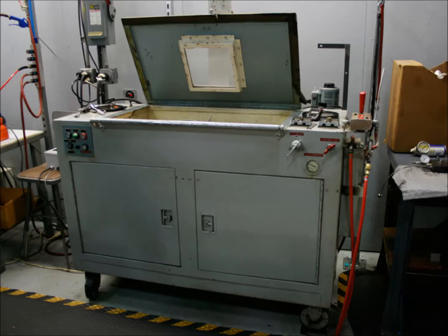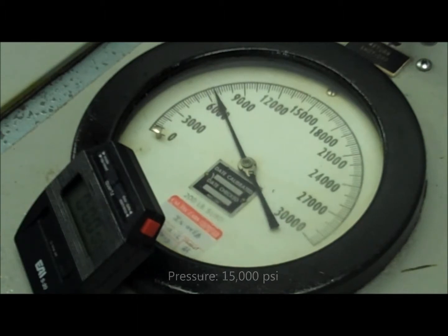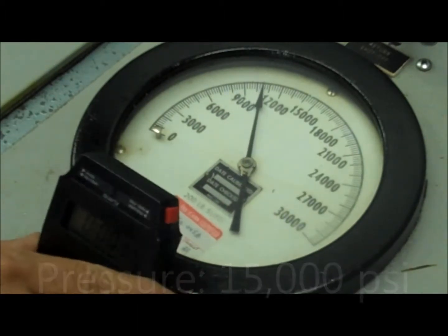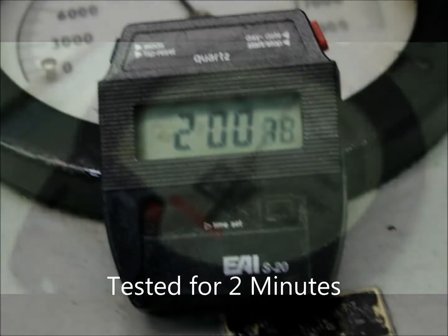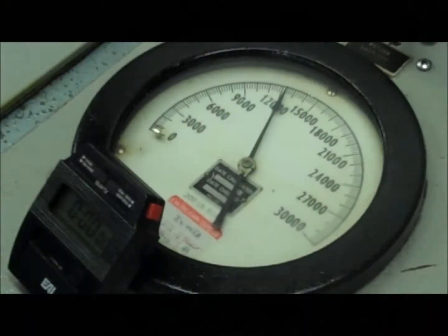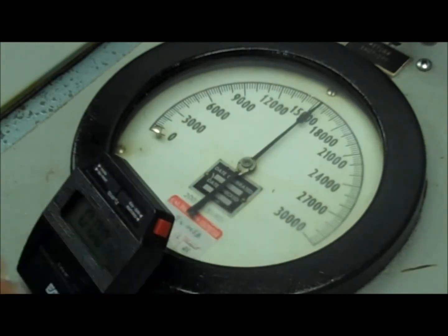We attach it to another fitting and do a static test. We build the pressure up to 15,000 psi and hold it for two minutes and check it for any kinds of leaks. If it leaks, we have to eliminate the hose, either make it a shorter hose or start all over. As you can see here, we're now at 15,000 psi and the stopwatch has started and we'll hold this for two minutes.